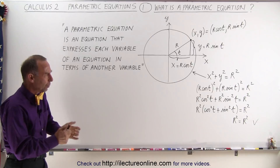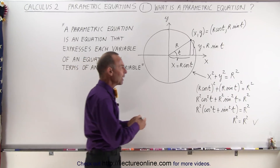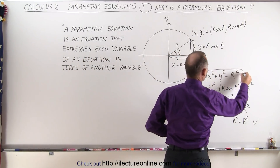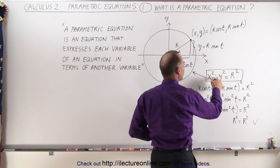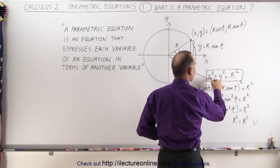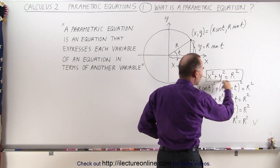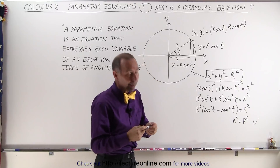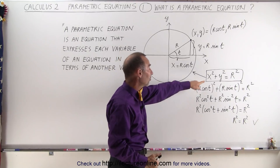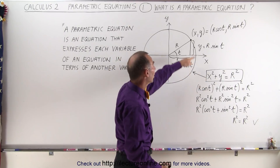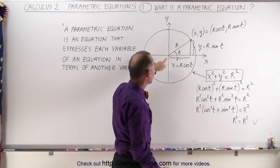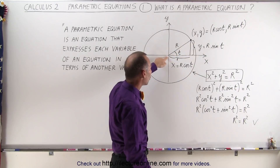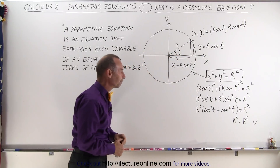What does that really mean? Well, let's say we have an equation: x squared plus y squared equals r squared. x and y are variables in this equation, and r is a constant. By now, most of us will realize that this is an equation of a circle with radius r, where the center is at the origin, the xy origin.